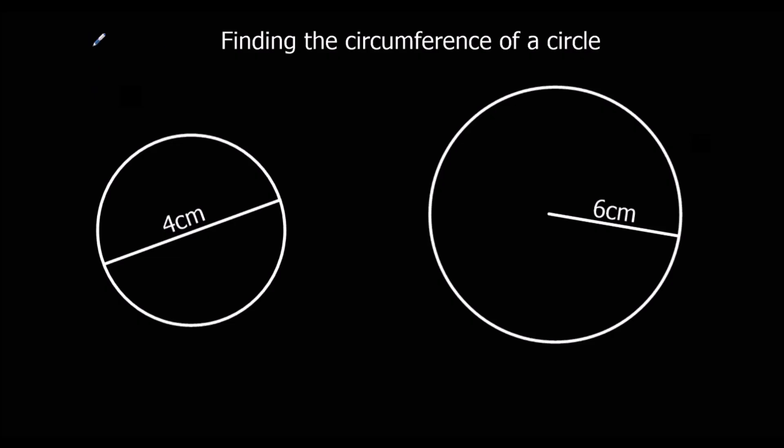Okay, so again, the formula to find the circumference, we do pi times the diameter, or 2 times pi times the radius. They give you the same answer. So in this case, we've been given the diameter, which is 4. So it's pi times 4, which is 4 pi. Or if you press the SD button, you can get that as a decimal.